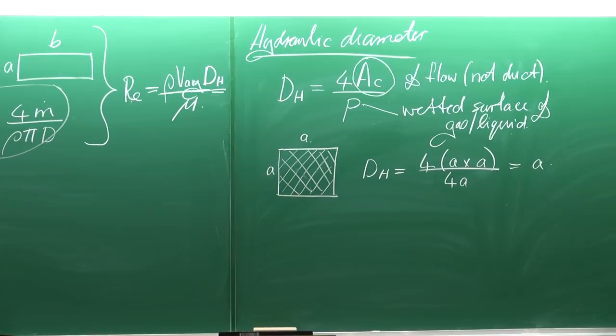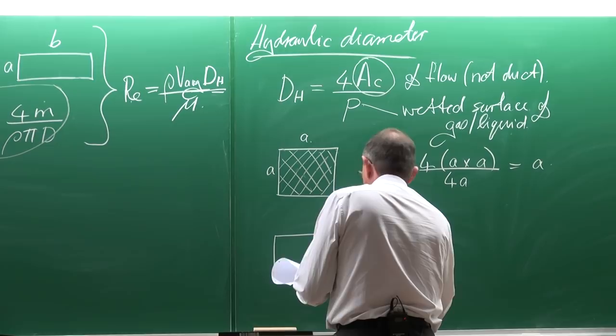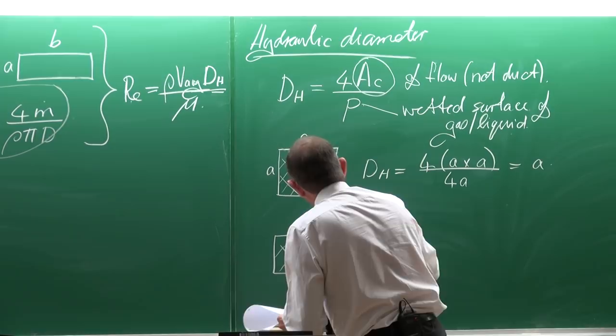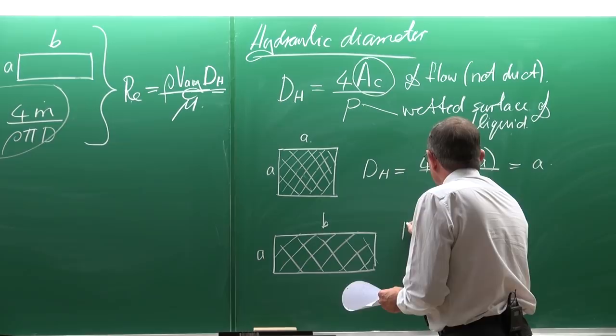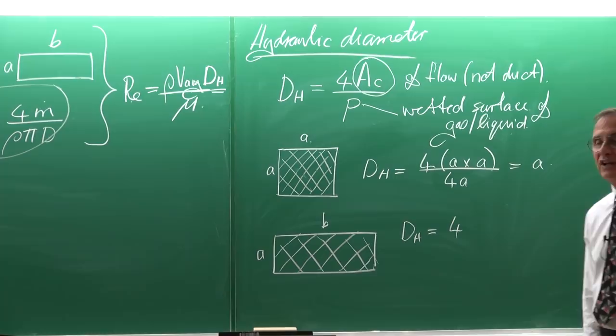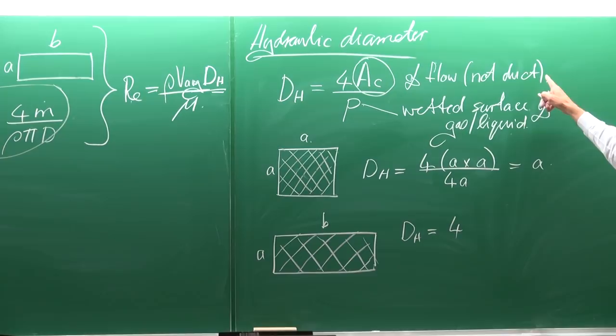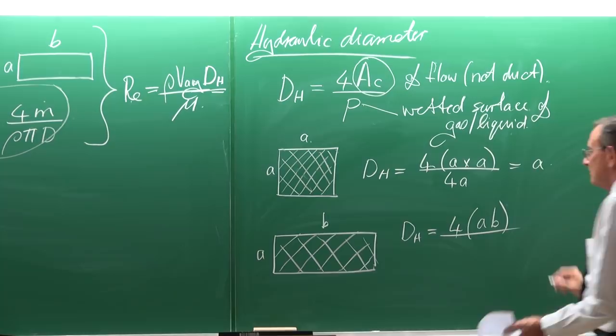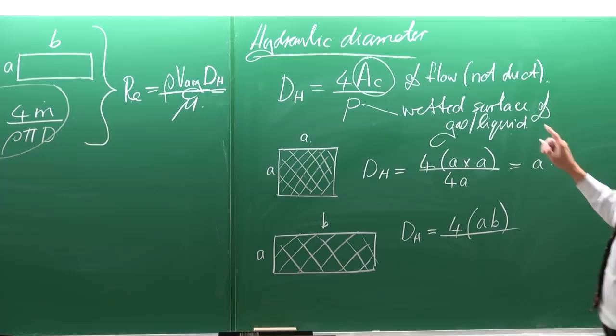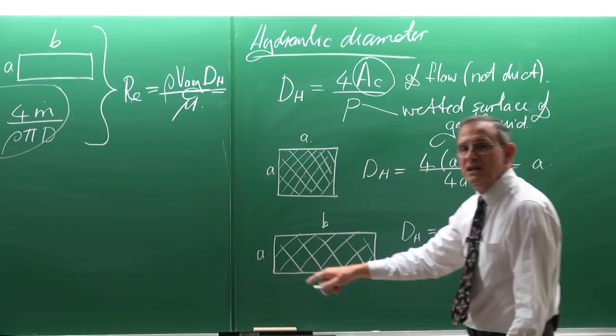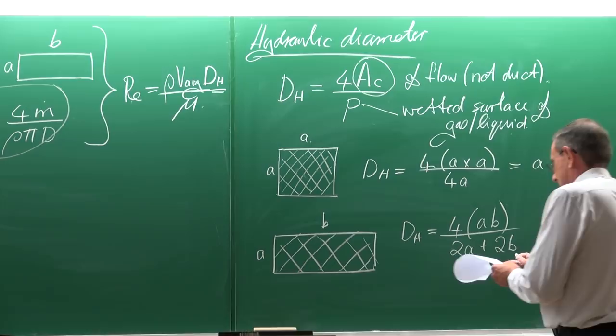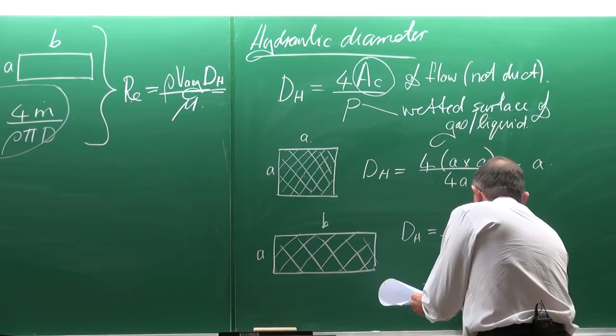For a rectangular section with dimensions A and B, the hydraulic diameter is four times the cross-sectional area of the flow — which is A times B — divided by the wetted perimeter, which is 2A plus 2B. This simplifies to D_h = 2AB/(A+B).